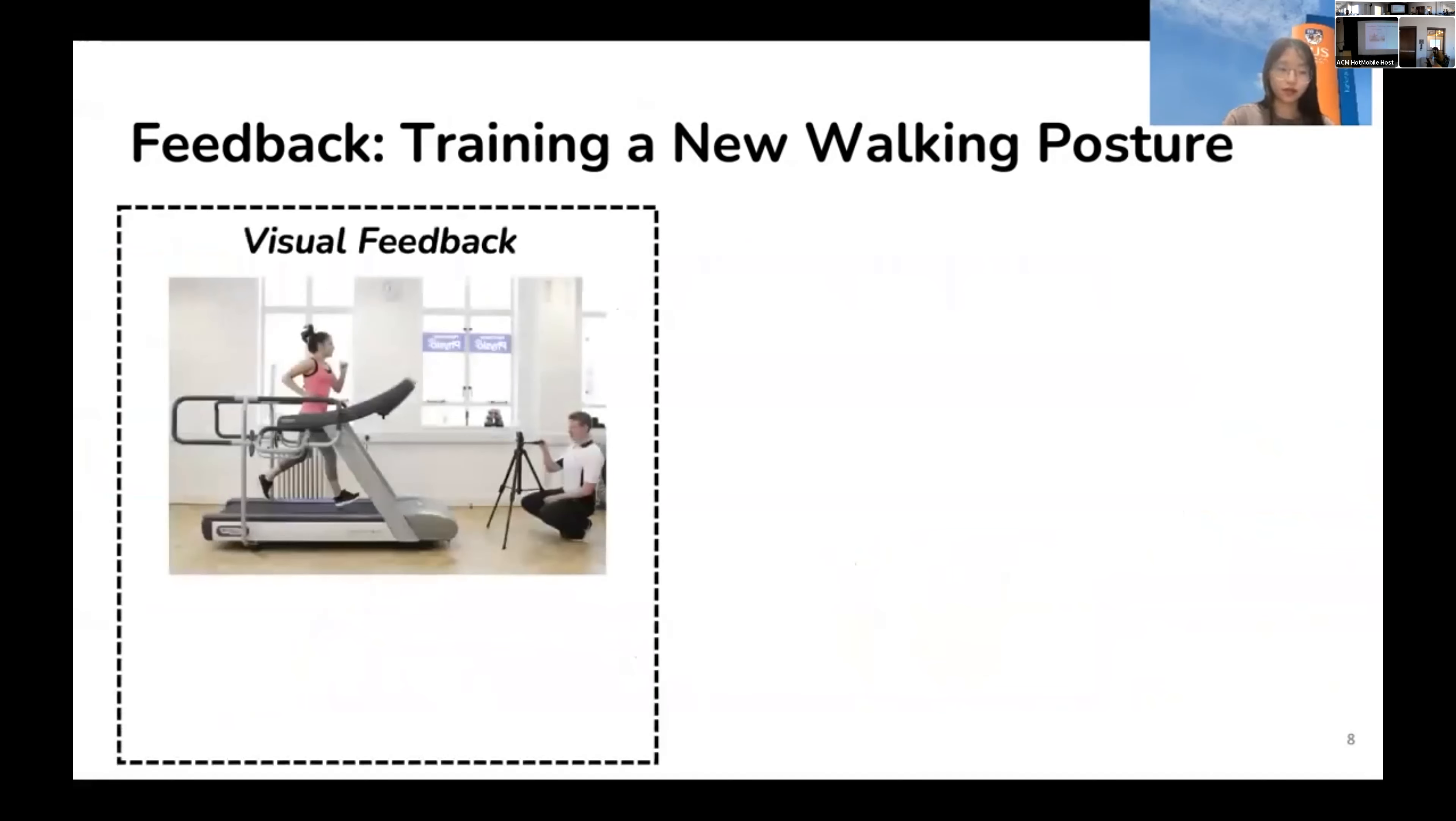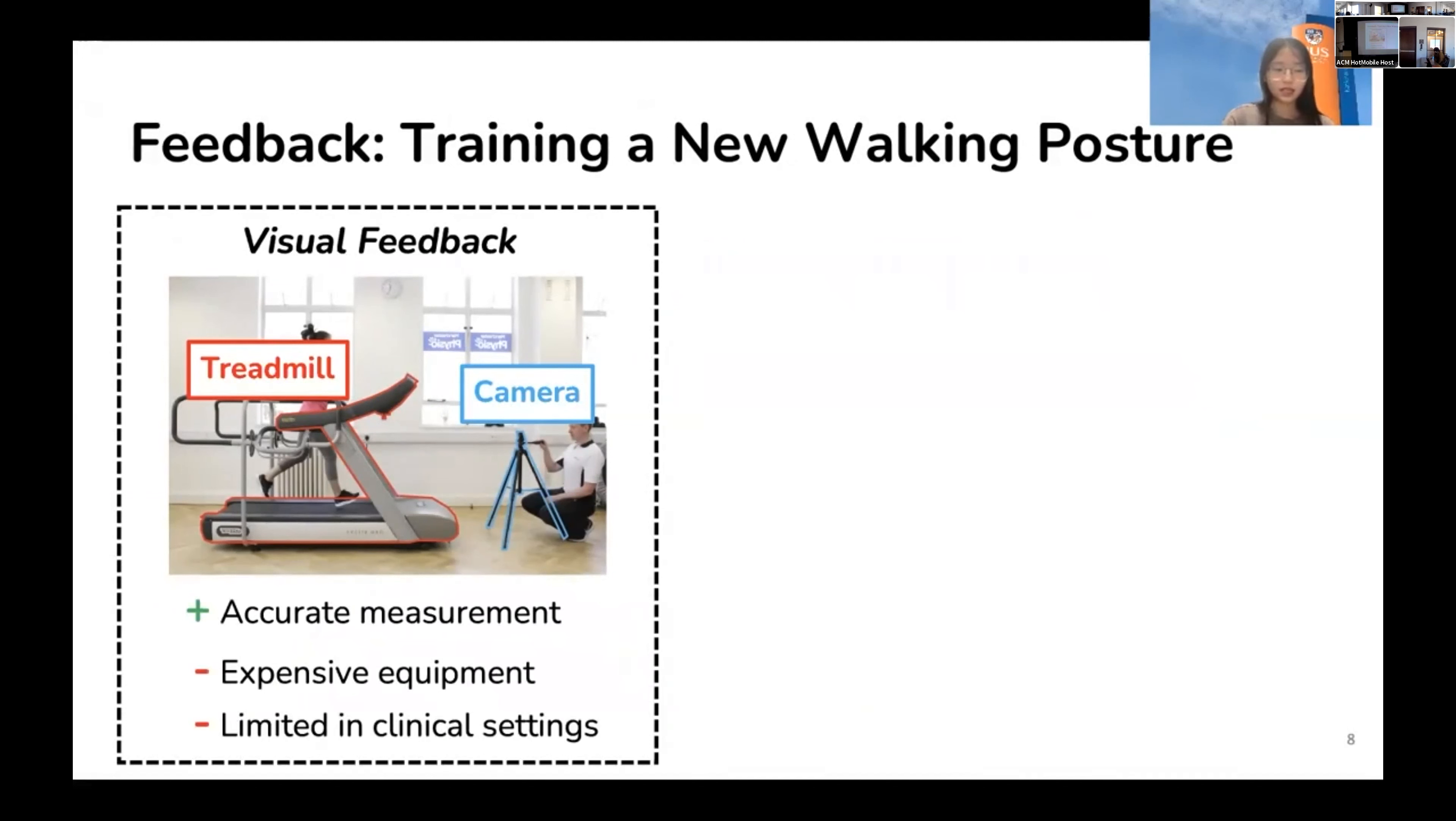First is visual feedback. This kind of method leverages treadmill, camera, or 3D motion capture system to measure the foot position and then visualize the measurement to the patient in real time. So the measurement is accurate. However, it requires expensive treadmill and motion capture systems. And most importantly, it limits the training only in clinical settings.